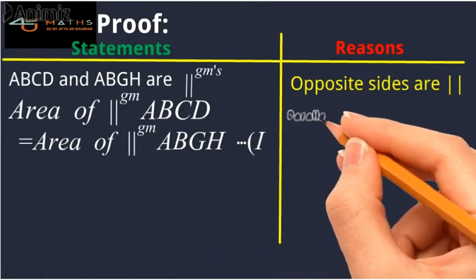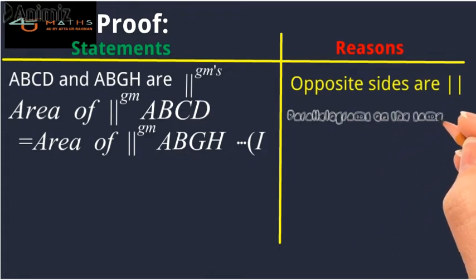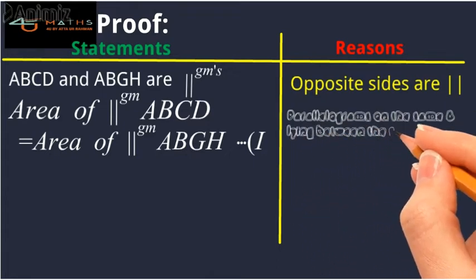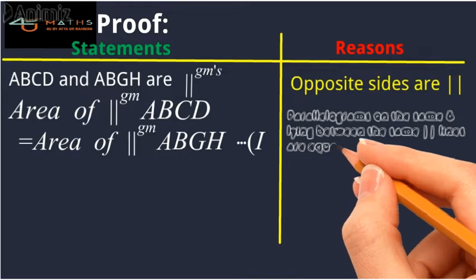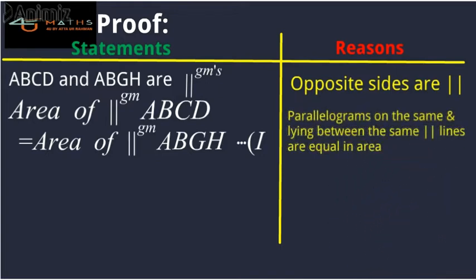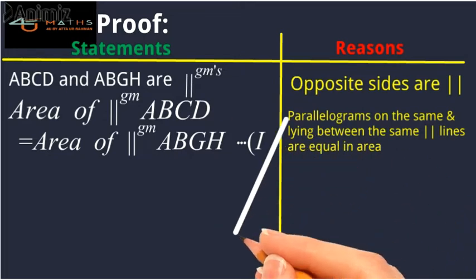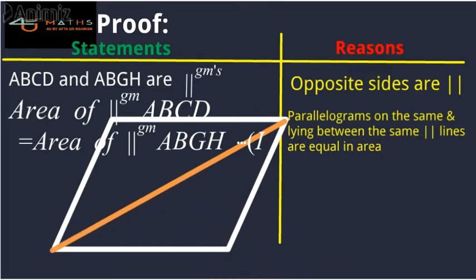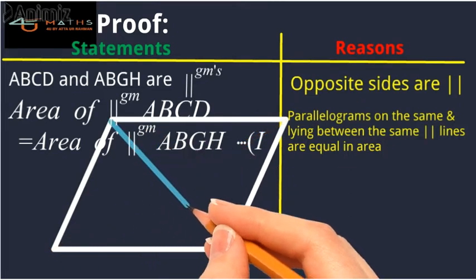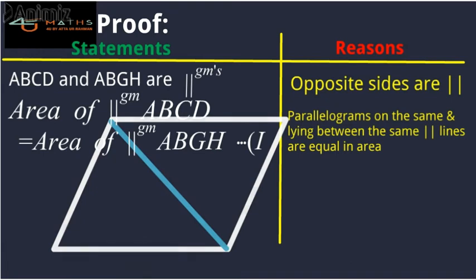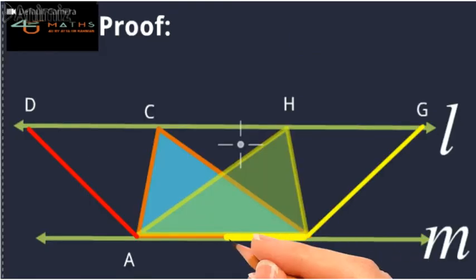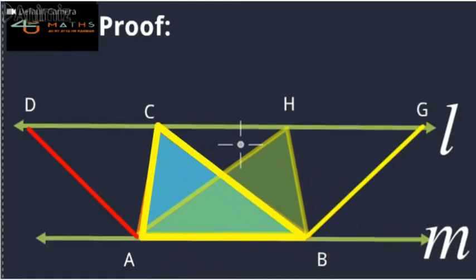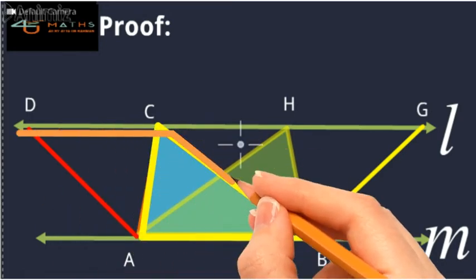The reason for this is: parallelograms on the same base and lying between the same parallel lines are equal in area. As we know, the diagonal of a parallelogram bisects it into two equal triangles. Therefore, the area of triangle ABC is equal to half of the area of parallelogram ABCD.